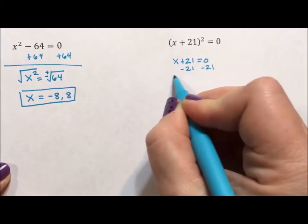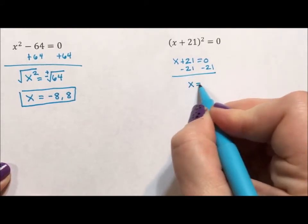And if I subtract 21 from both sides, I have that x is equal to negative 21.